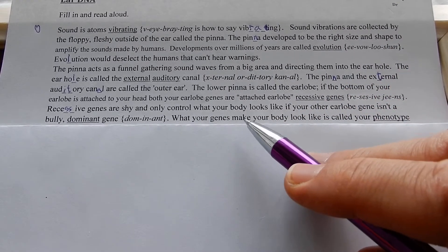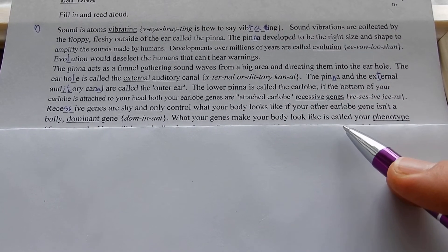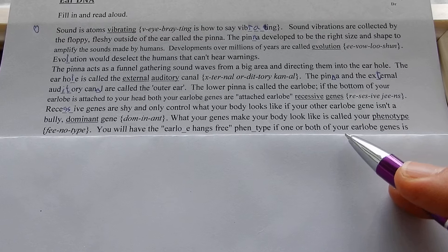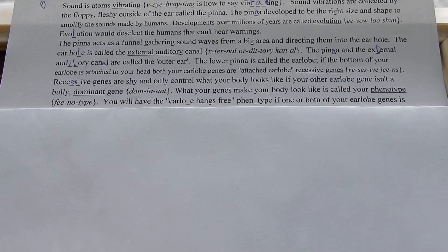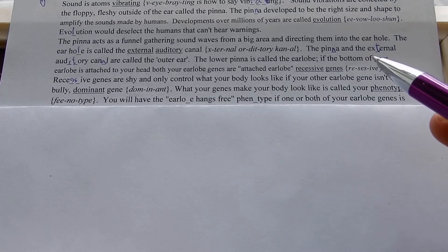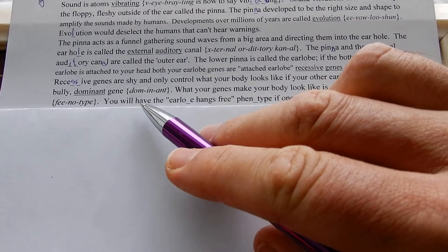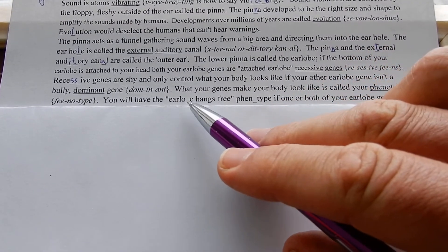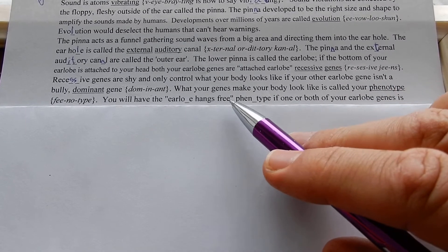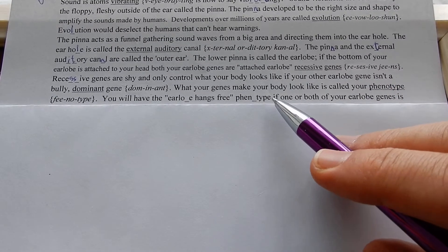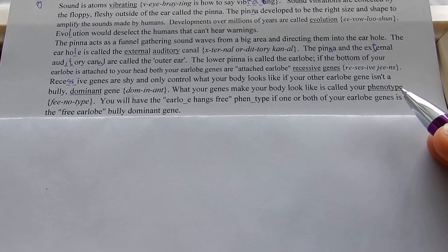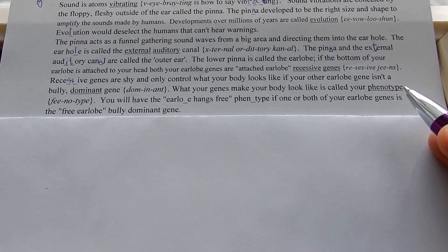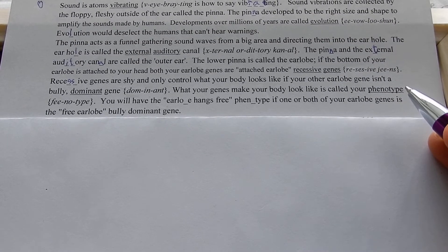What your genes make your body look like is called your phenotype. Of course, lots of people think every human should look the same — they're called fashion magazines. You will have the free ear lobe phenotype if one or both of your ear lobe genes is the free ear lobe bully dominant gene.